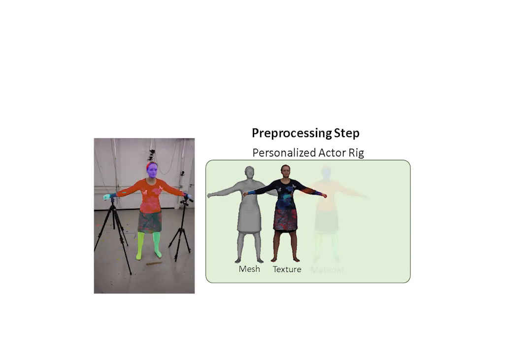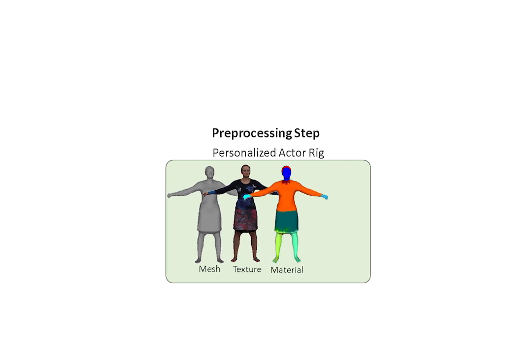The per-vertex labels are then used to automatically adapt the rigidity regularizer weights during the non-rigid tracking. Finally, we rig the model with a kinematic skeleton.